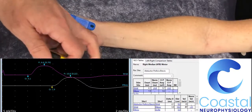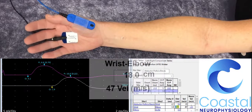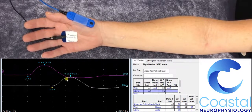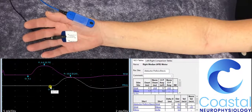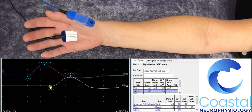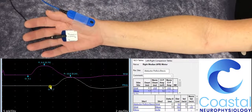By measuring this distance, we can then calculate a speed of nerve conduction. This allows us to measure both the size of the electrical signal that comes through the nerve to the muscle, and also the speed at which it conducts.